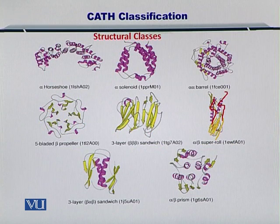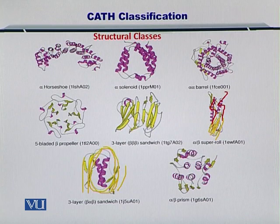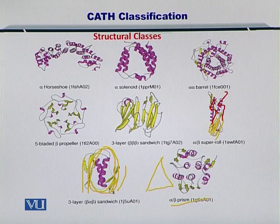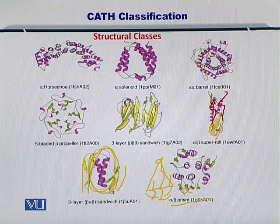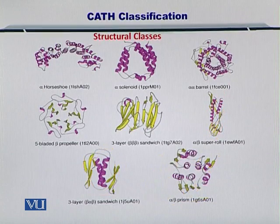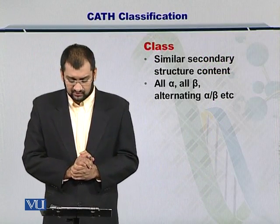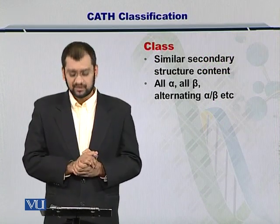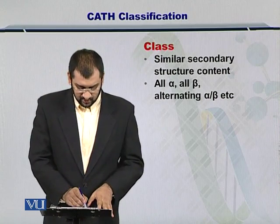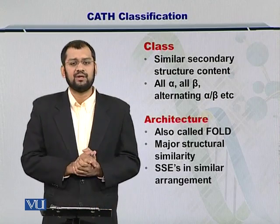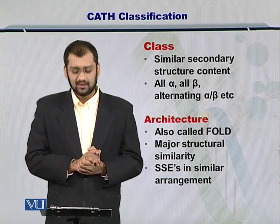Next is the beta-alpha-beta sandwich, where you can see beta sheets on both sides and alpha helices in the middle. And lastly, you have the alpha over beta prism, where the entire structure is organized like a prism with alpha helices going down and linked by beta sheets. These are the various structural classes that exist, where each class is similar in its secondary structural content — all alpha, all beta, alpha over beta, alpha plus beta, or alpha and beta.